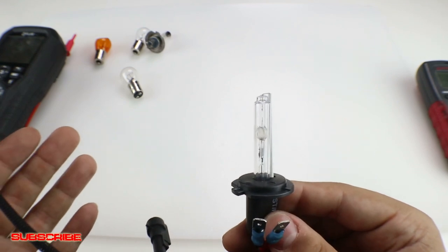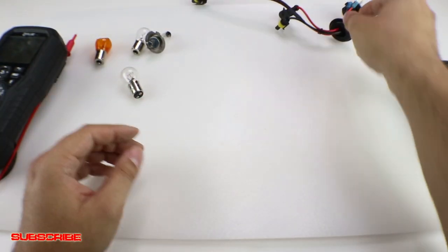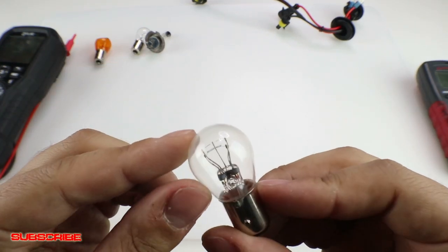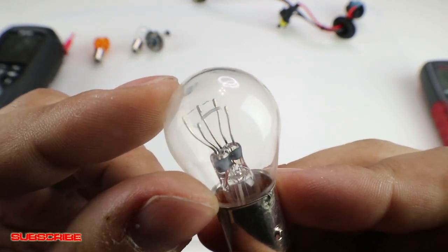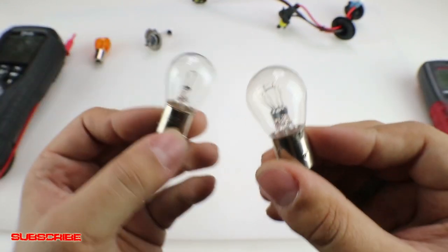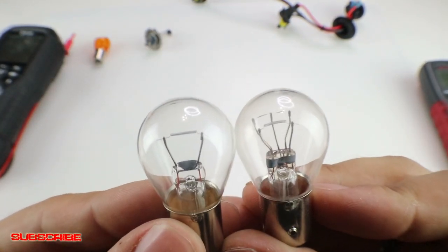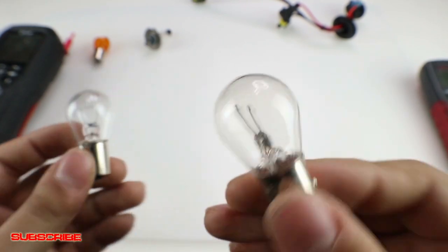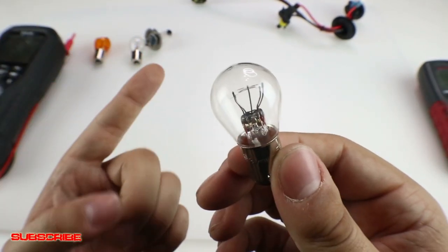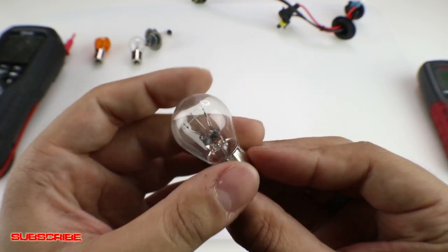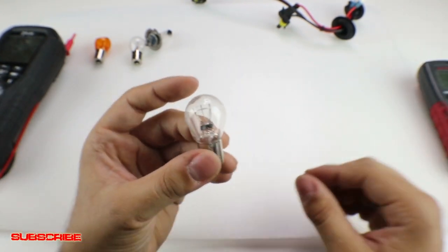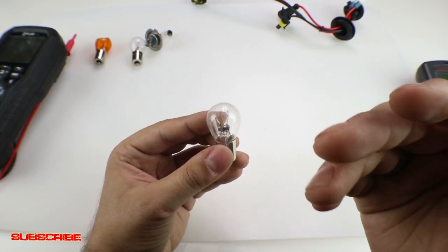When it comes to double filament bulbs, this is what a double filament looks like. Whereas the same thing as a traditional single filament bulb, except you have two of them. In this setup you're typically going to have a high beam and a low beam. As far as which one is which, I don't really know personally.